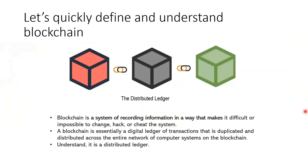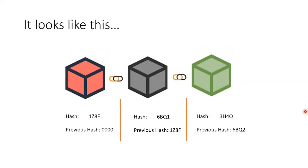We know what blockchain is — it's a distributed ledger, a system for recording information which makes it very difficult or impossible to hack, change, or cheat the system. It is a digital ledger of transactions which is duplicated and distributed across the entire network. It's multiple blocks coming together in a distributed ledger. When you talk about blockchain, you can have three blocks to explain how it looks — block one, two, and three.